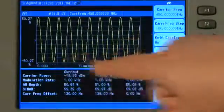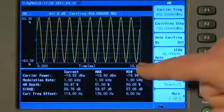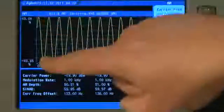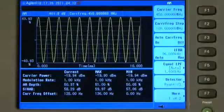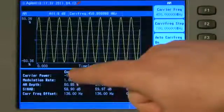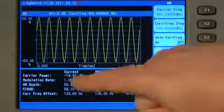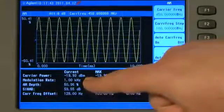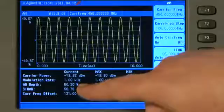The X axis of the oscilloscope display still shows us the time in milliseconds, but on the Y axis, it is now measuring AM depth in percentage. So if we look at the table, you can see the current and max and min values of carrier power, modulation rate, still 1 kHz, the AM depth, approximately 50%,